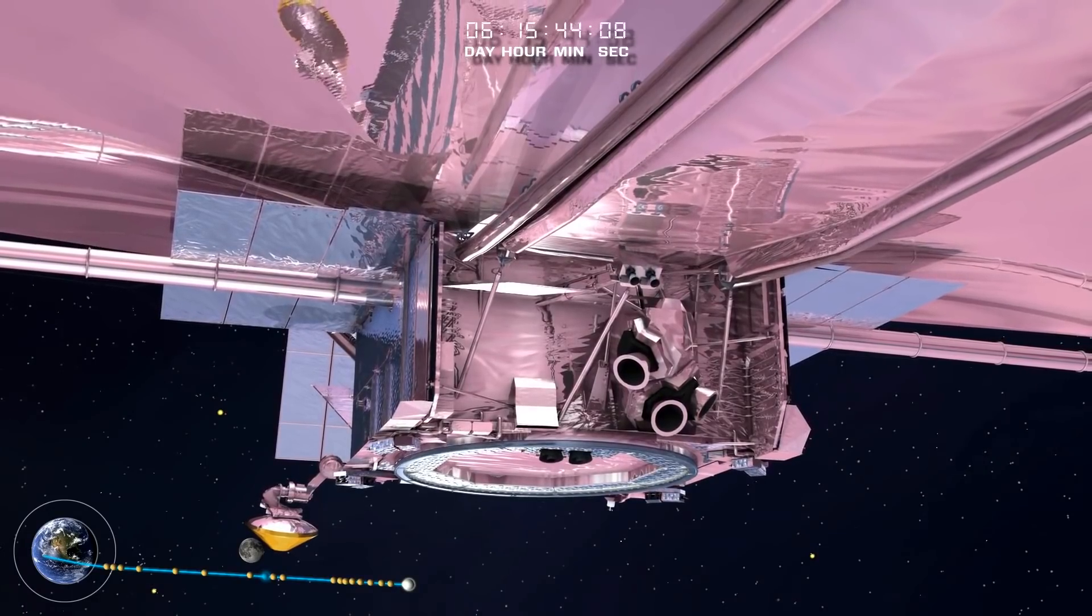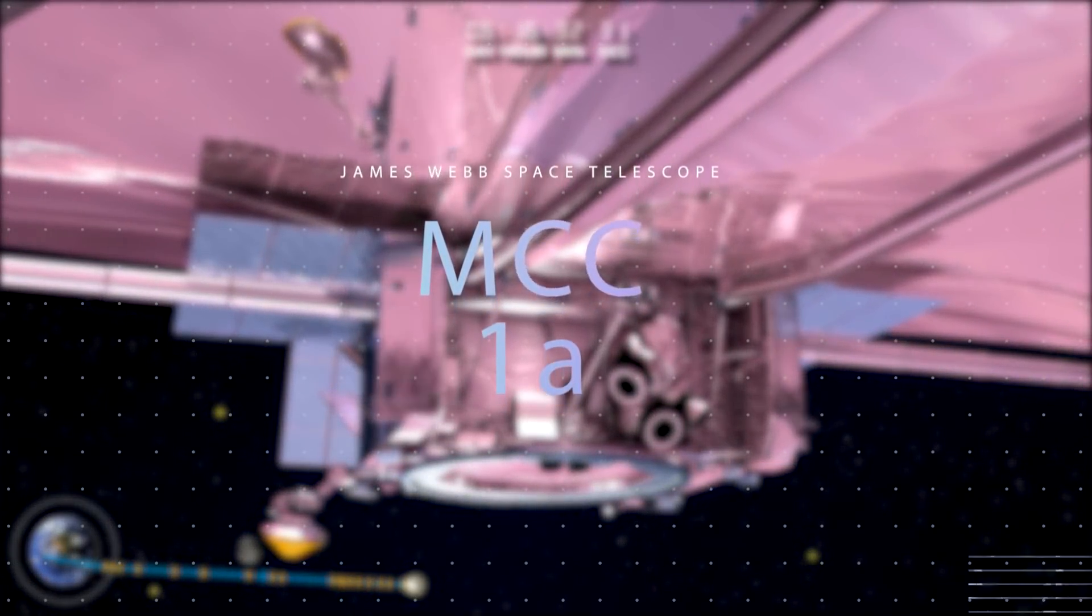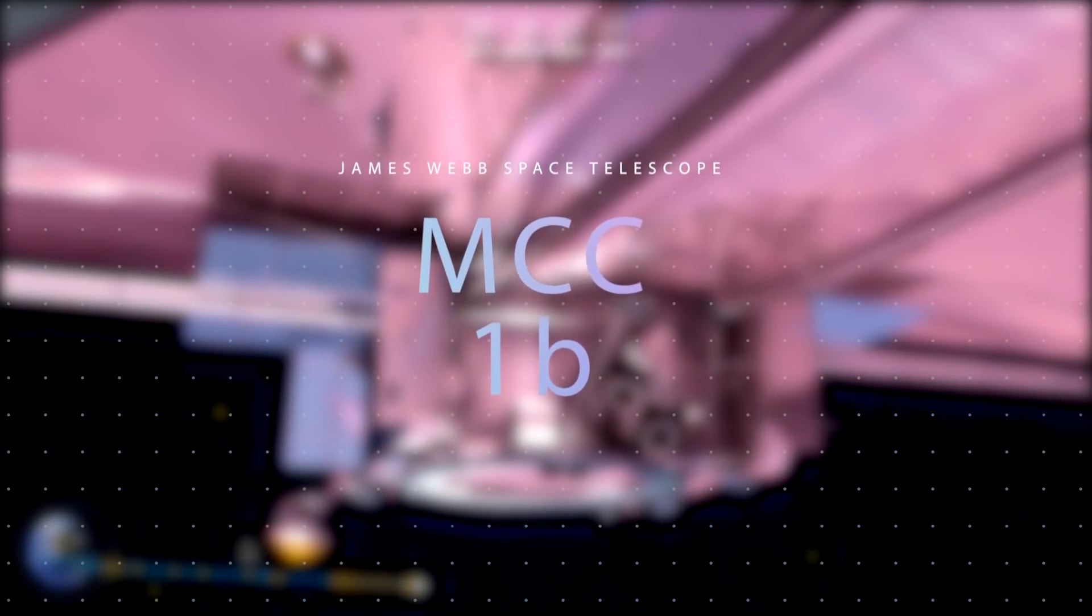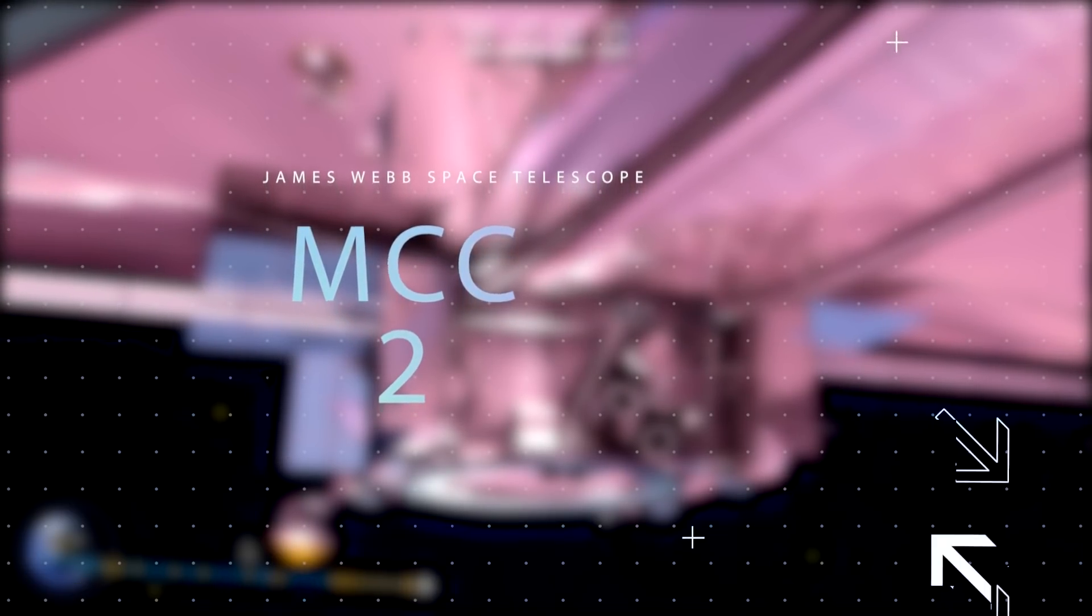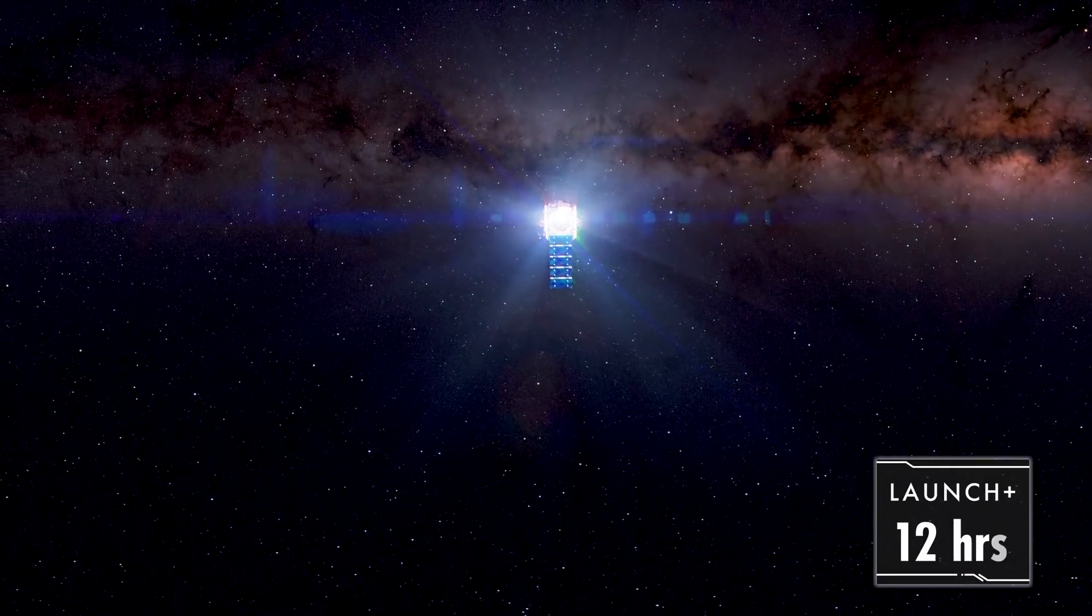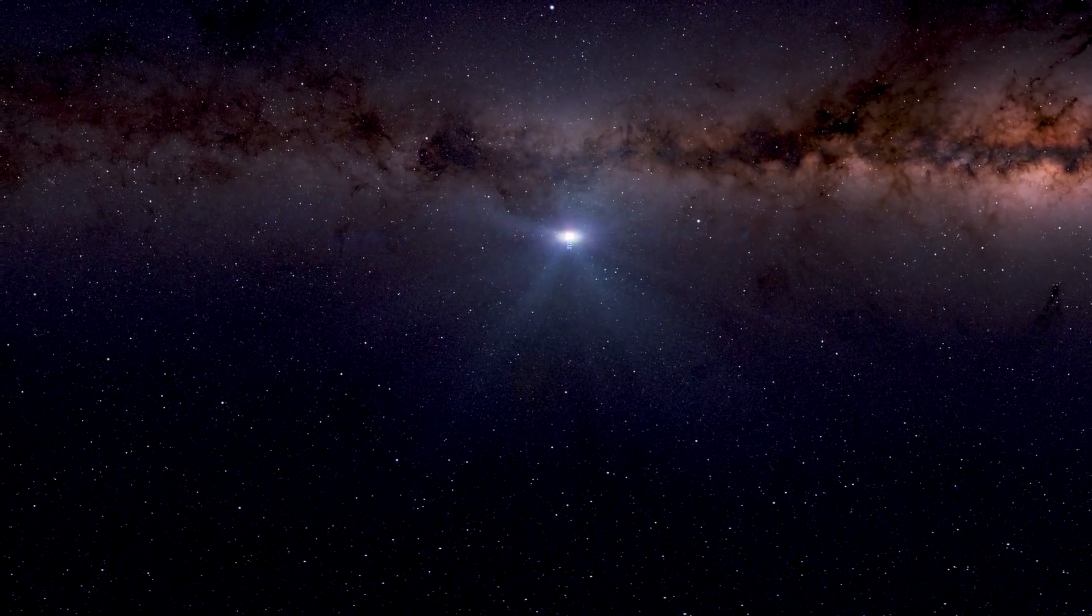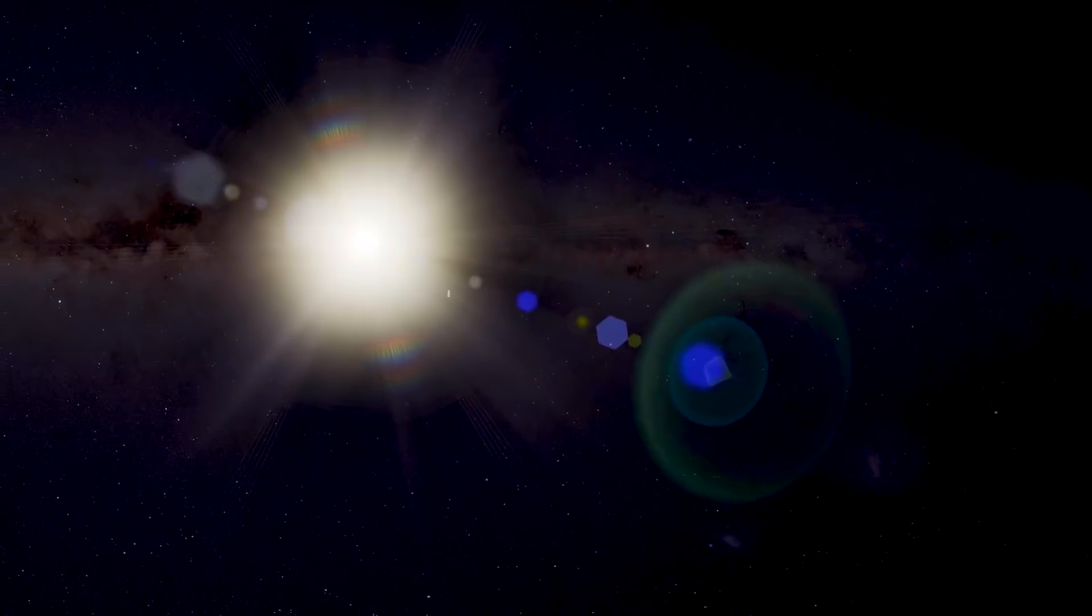There will be three mid-course correction, MCC maneuvers: MCC-1A, MCC-1B, and MCC-2. The first burn, MCC-1A, is the most important and the only other time-critical operation aside from solar array deployment during Webb's commissioning period.